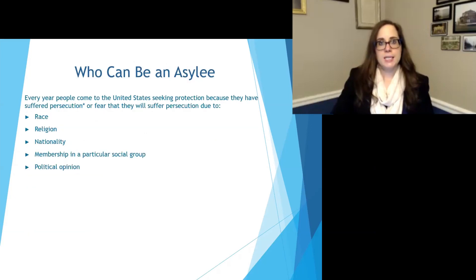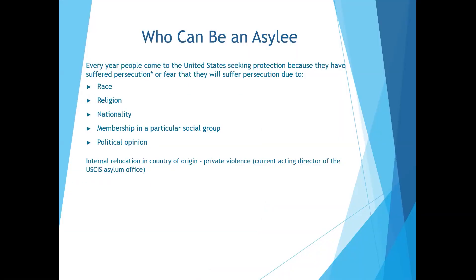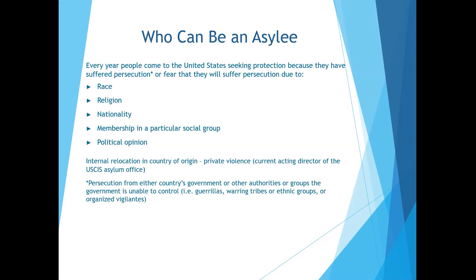People who come to the United States to seek this protection have either suffered or fear they're going to suffer persecution based on their race, religion, nationality, membership in a particular social group, or political opinion. That persecution has to come from either that country's government or a group the government is unable to control. This means gangs — such as MS-13 in El Salvador or the Zetas in Mexico — are considered private individuals and do not count for an asylum claim.